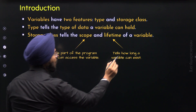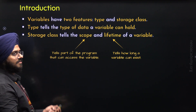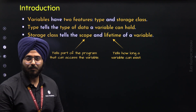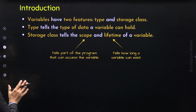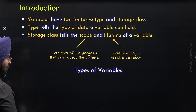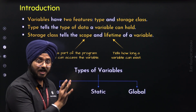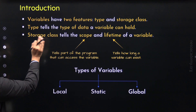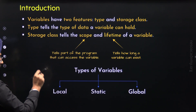Lifetime tells how long a variable can exist — when it will be destroyed. Based on the storage class, we can classify variables into three types: local variables, static variables, and global variables. We will understand these three types one by one in this lecture.